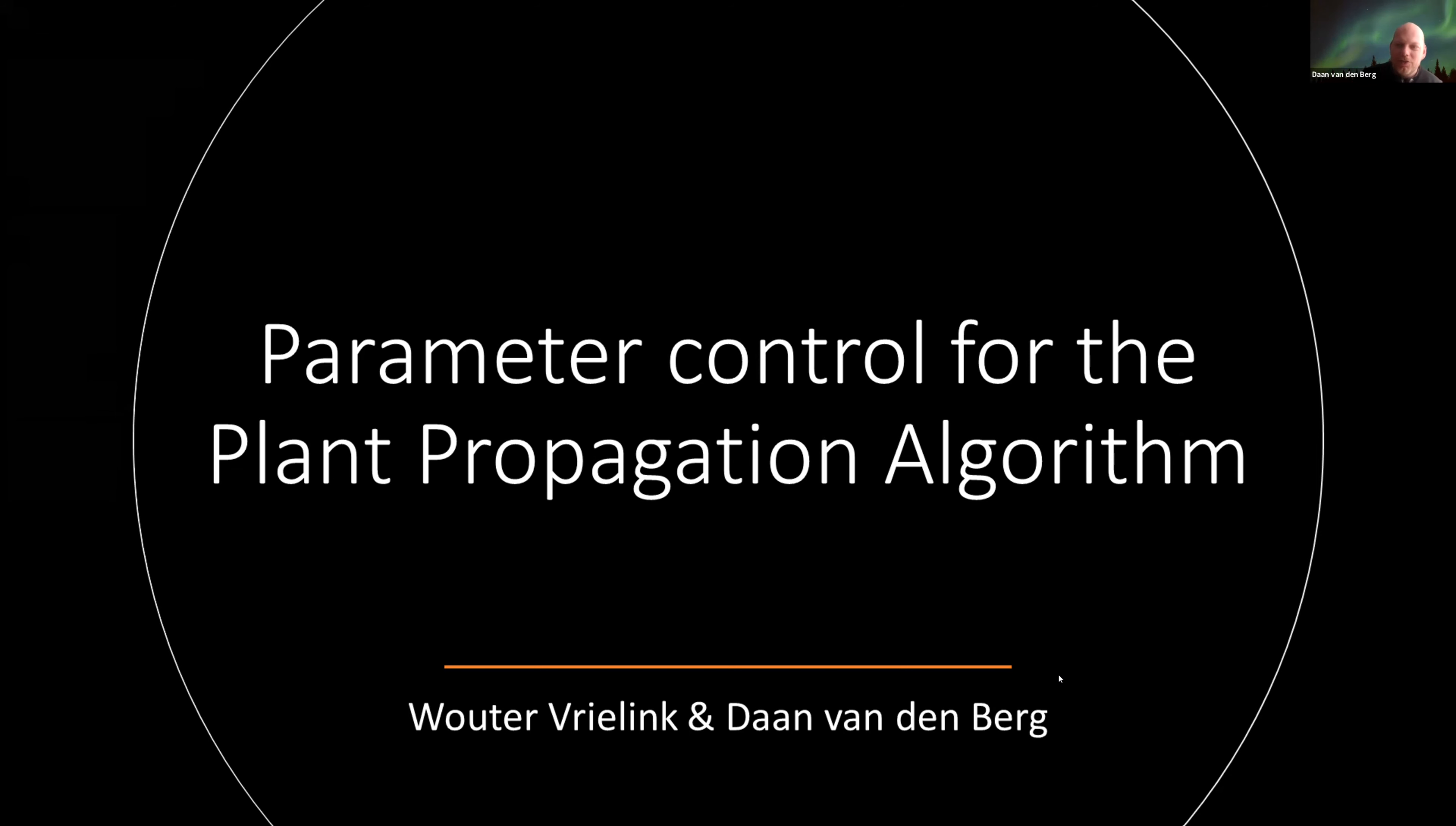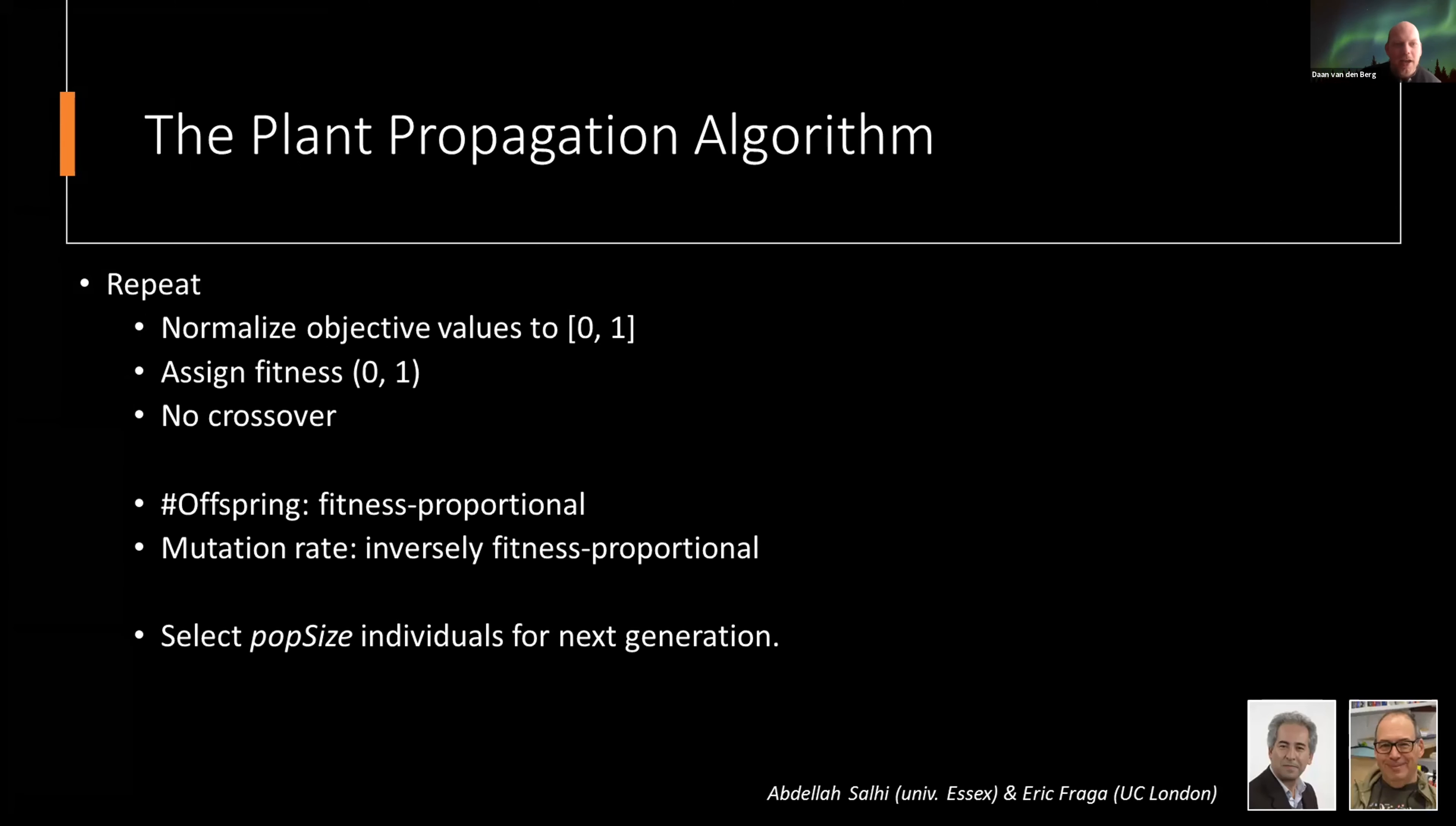This talk is about the plant propagation algorithm. The plant propagation algorithm is a population-based algorithm, so you have a population of say 30 individuals. What it does is, for these individuals, first it normalizes all the objective values between zero and one, so the highest has one and the lowest has zero. Now there is a tricky little step between assigning the objective values and assigning the fitnesses - there's a little step in between.